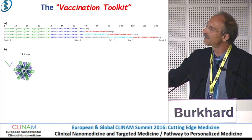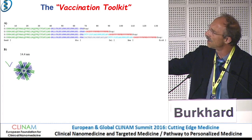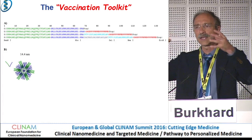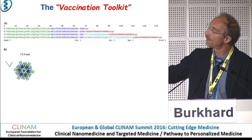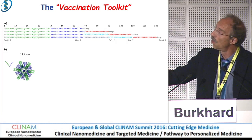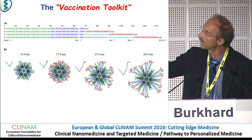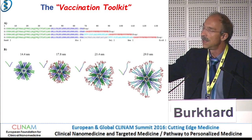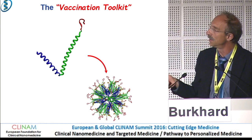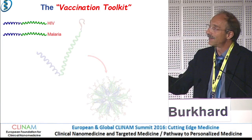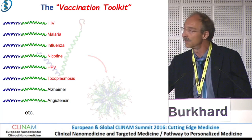We can engineer different sizes of the particles depending on the size of the protein. In green you have the pentamer, in blue the trimer, and in red we attach an epitope from an antigen — here, a malaria epitope just on top of the protein chain. It's still only one single protein chain. By making the trimer a little bit longer, you just increase the size of the particles. A particle of this size is a very good immunogen. We can use this as a vaccination toolkit — you can engineer a vaccine against pretty much any disease you're interested in.